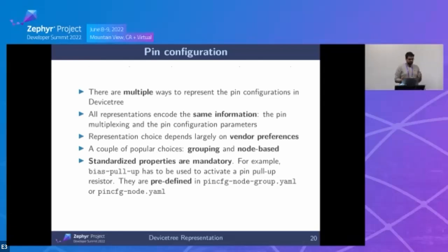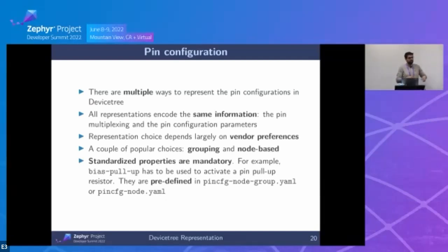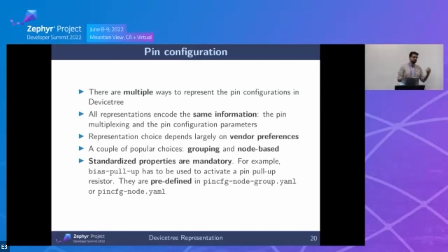There's no single way to represent pin configurations — there are multiple approaches. When we implemented this API we had a broad discussion on standardizing the representation; there was no real consensus, so we provide guidelines but vendors can choose their own approach. Regardless of representation, all approaches encode the same information: pin multiplexing and pin configuration parameters. We did standardize the property names though — for example, to enable pull-up you must use the standard property, not a custom name. This comes from Linux as well.